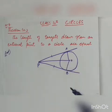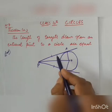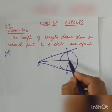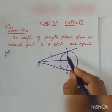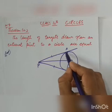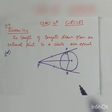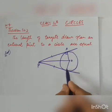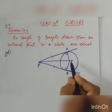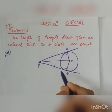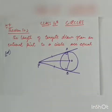We know from Theorem 10.1 that the tangent and radius have a perpendicular relationship. So we have a 90-degree angle at A. Similarly, the angle at B is also 90 degrees, because PB is a tangent and OB is a radius — so radius and tangent are perpendicular, making angle B equal to 90 degrees.